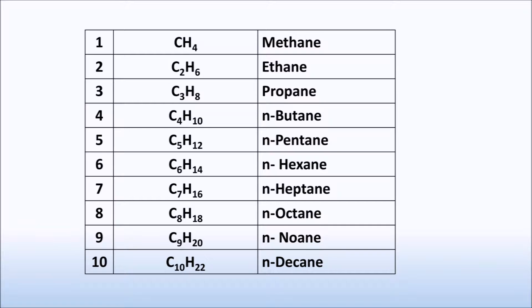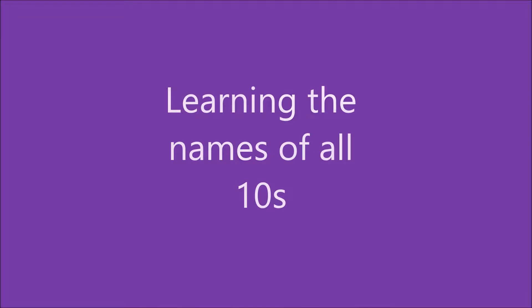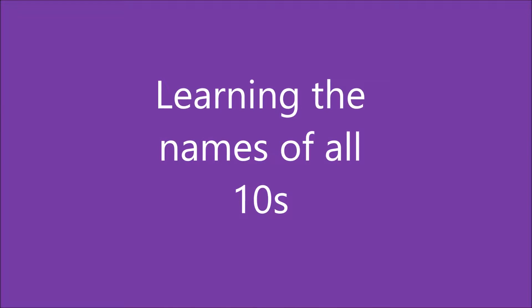N stands for normal, which means all carbon atoms are arranged in a straight chain. To learn names of higher alkanes, let's begin with the names of all tens.